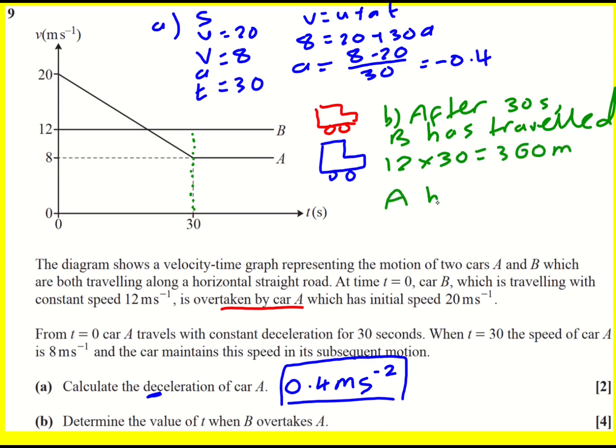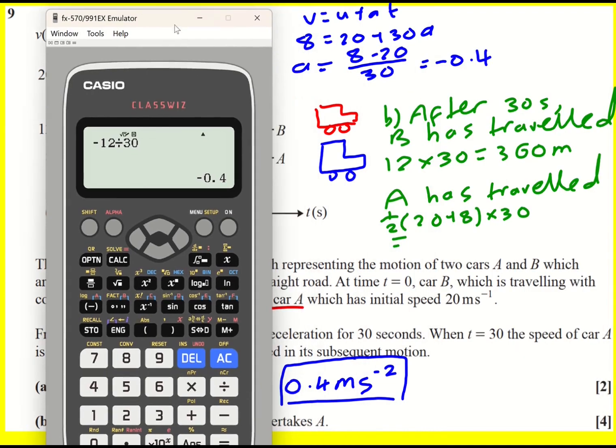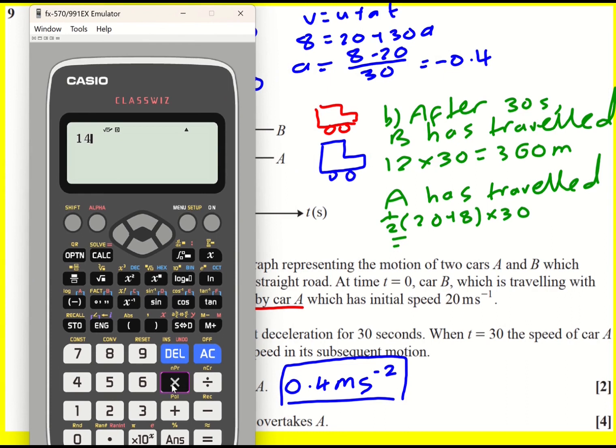Whereas A would have traveled the area of this trapezium. So it's going to be a half times 20 plus 8 times 30. In fact, this is using S equals a half U plus V times T, but I'm just ignoring that really and just finding the area under the graph. So I'll pull out my calculator. It's going to be a half of 28, which is 14, and then 14 times 30. So 420 meters.